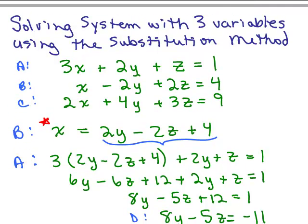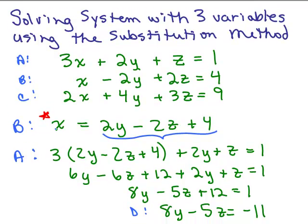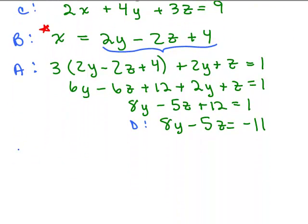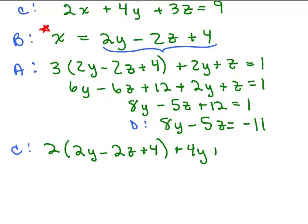I also need to plug 2Y minus 2Z plus 4 in for X in equation C. So we take equation C and do the same thing: 2(2Y minus 2Z plus 4) plus 4Y plus 3Z equals 9. If you watched the way I did this using the addition method, I think that's a little bit easier to be honest — you have to keep track of a lot of things here and need a lot of space across each line. But this is how you do the substitution method; it gets lengthy but it's still doable.